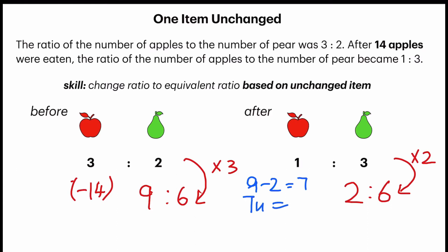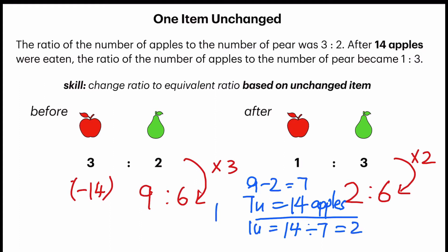There is a change of 7 units. What does that change refer to? If you follow the question, 14 apples were eaten — so this 7 units refers to 14 apples. With that, we are on the way to solve any part of the question, because we can find 1 unit: 14 divided by 7 gives me 2. This is the key to finding the number of apples, the number of pears, or even the number of apples and pears before and after.